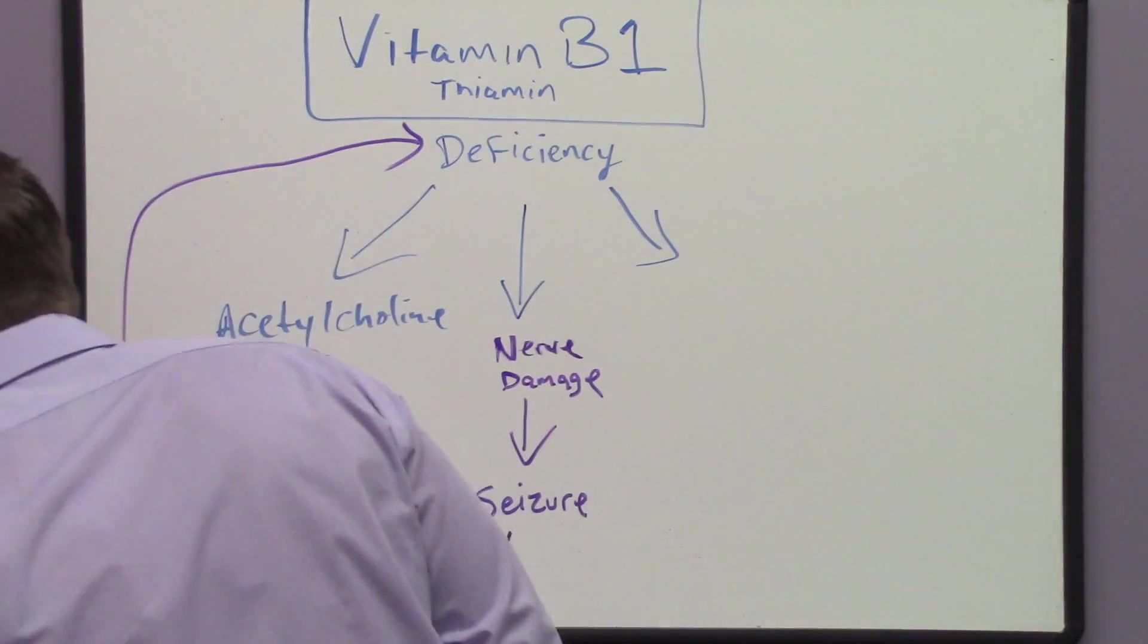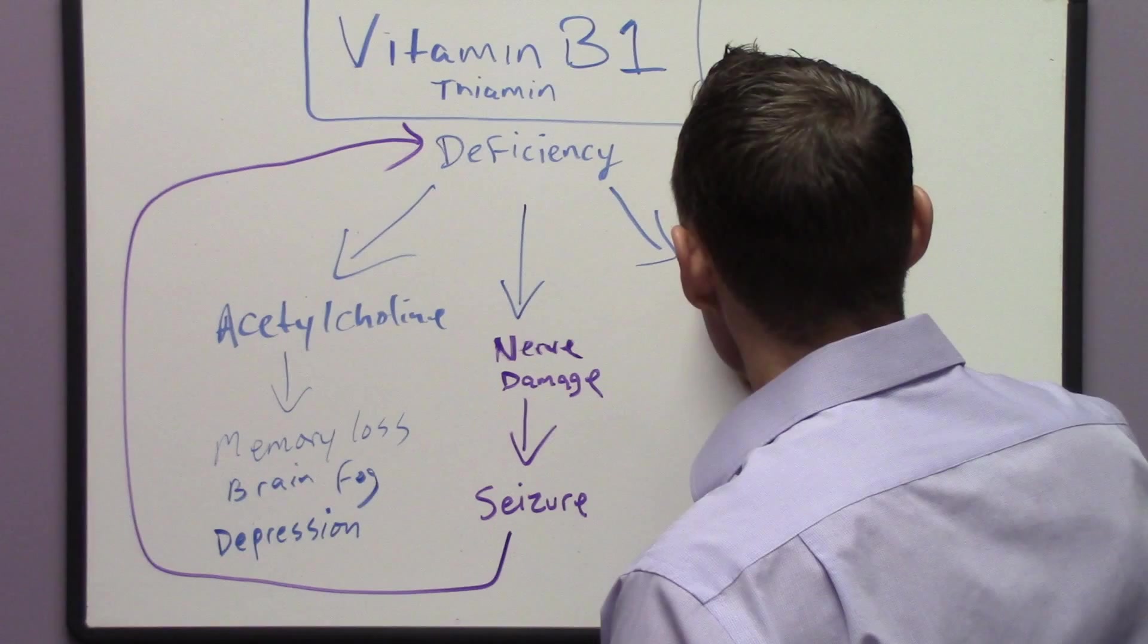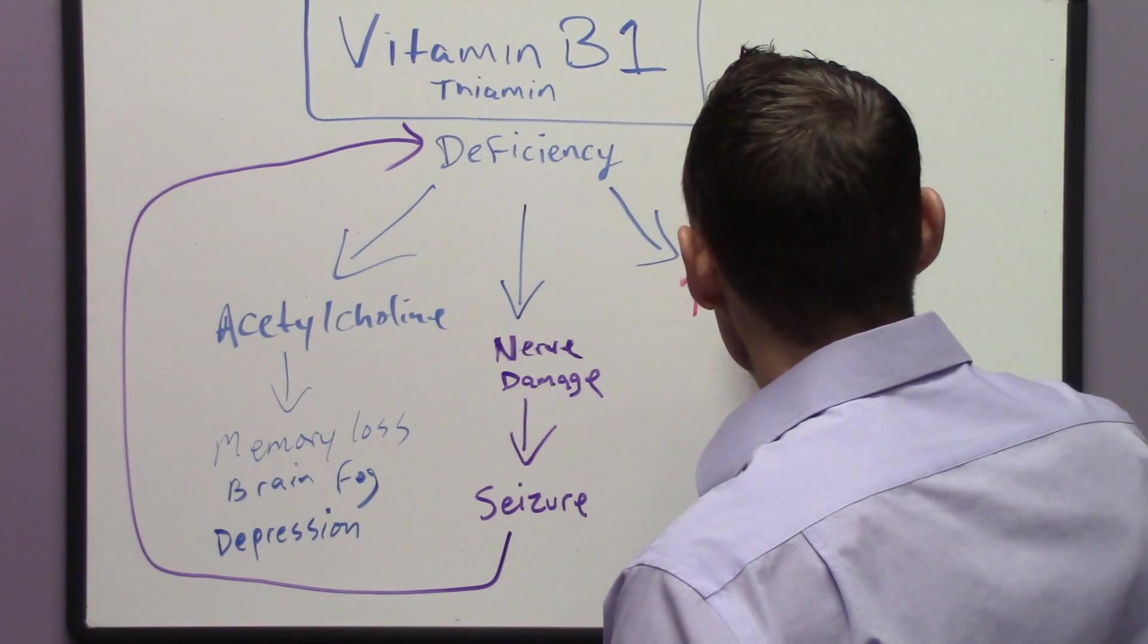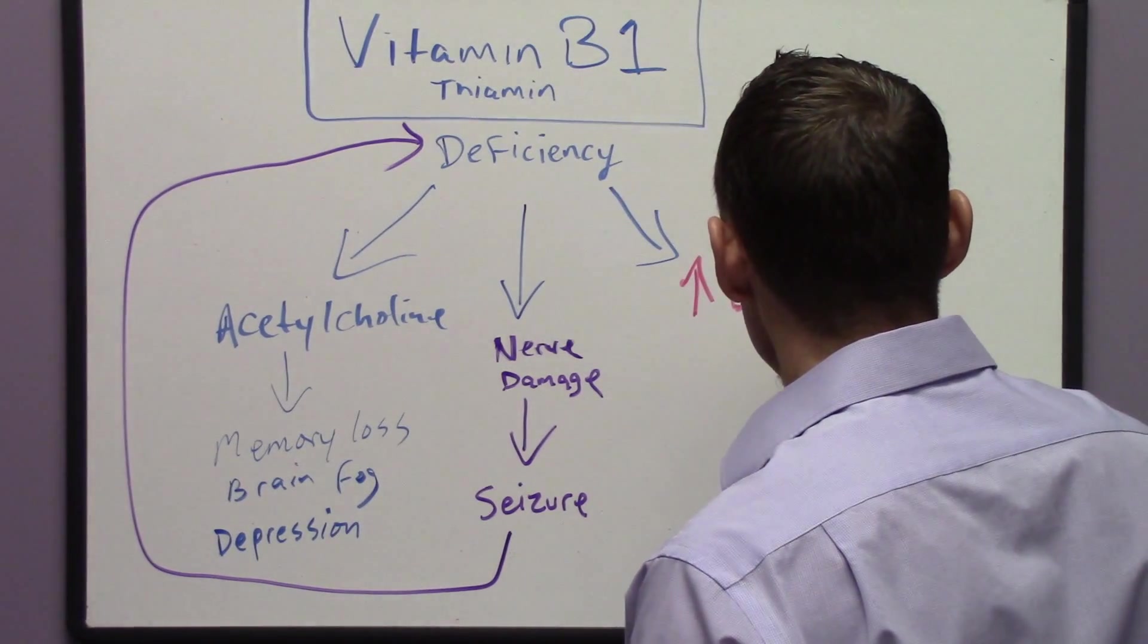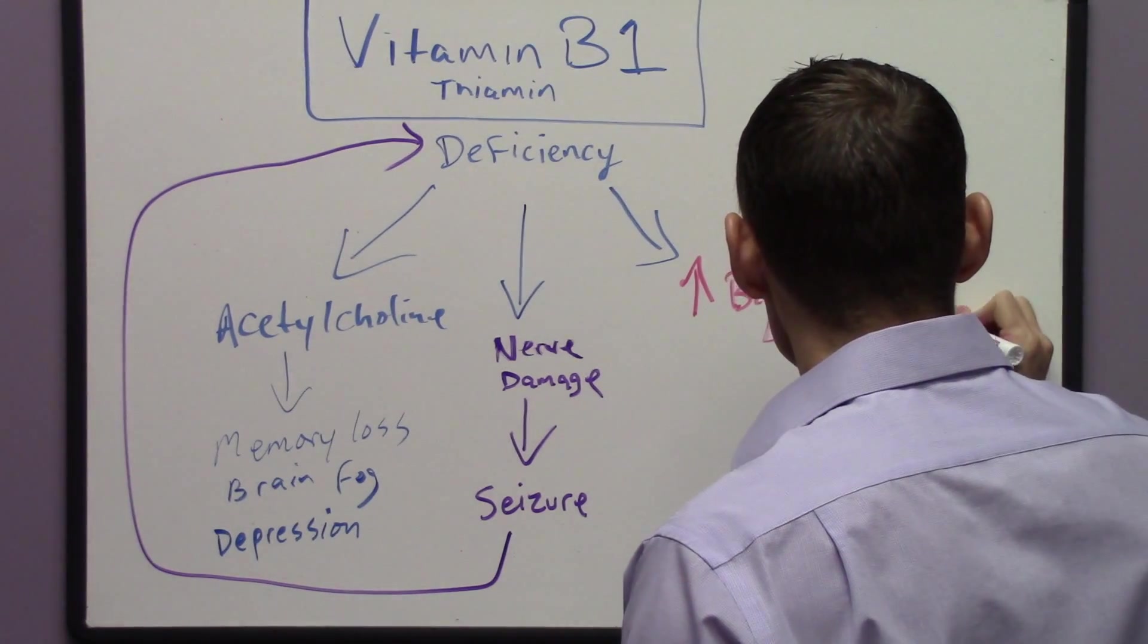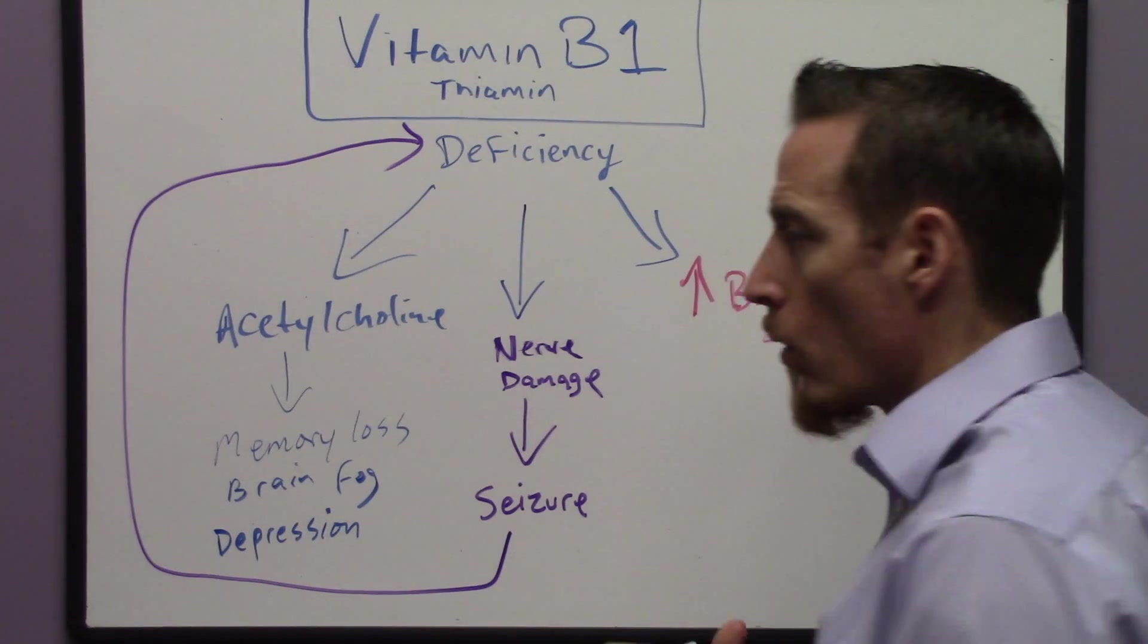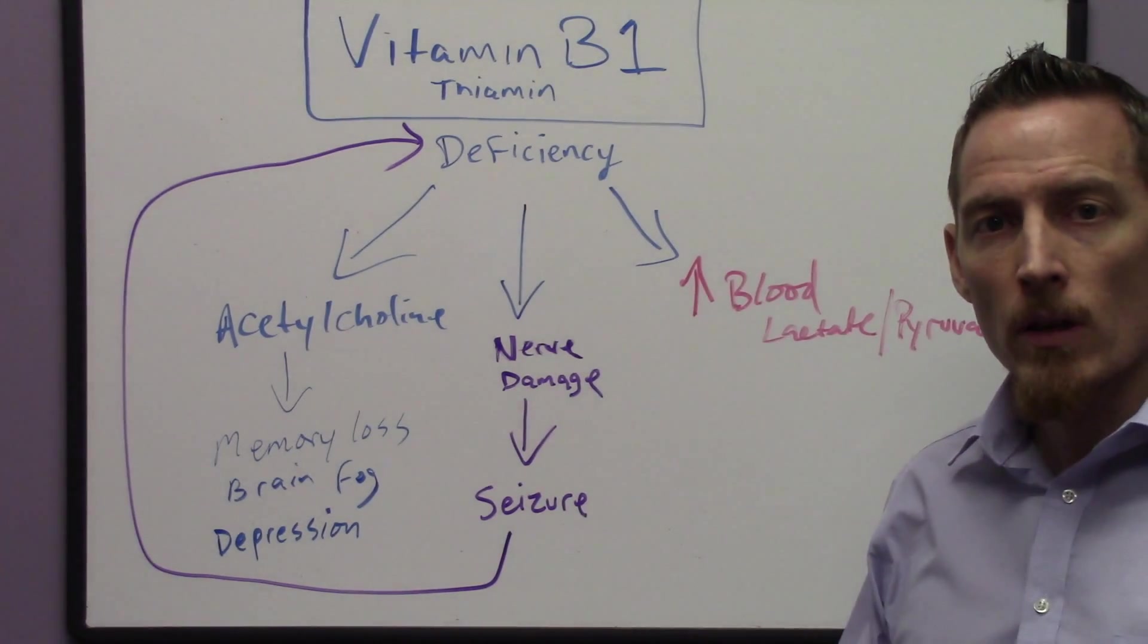One of the other parameters or components to vitamin B1 deficiency that's actually quite common is it will affect blood levels of a couple of different chemicals we call lactate and pyruvate. Now, these are molecules necessary for production of energy inside muscle tissue.